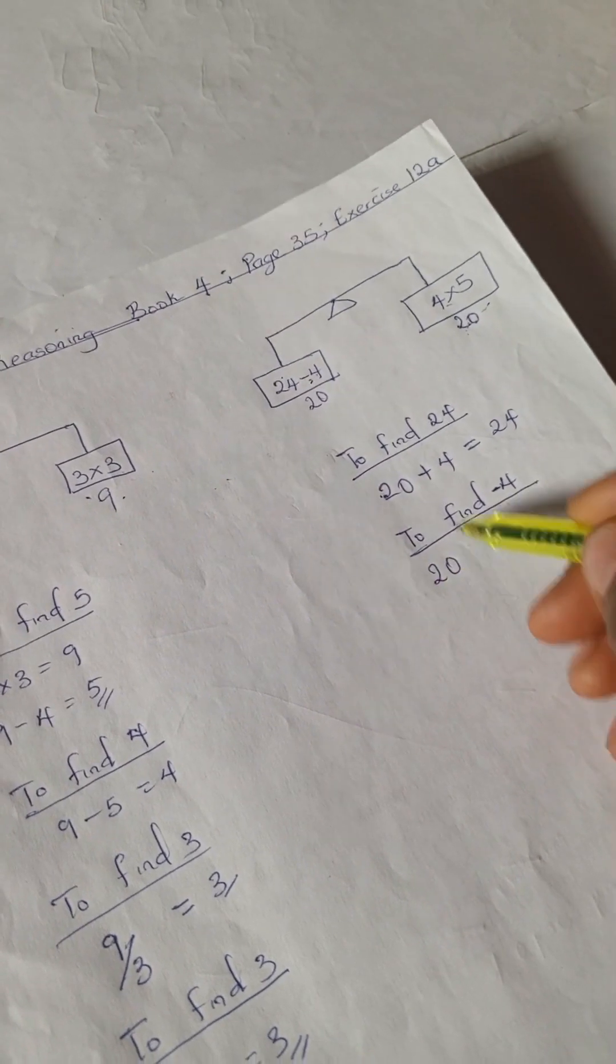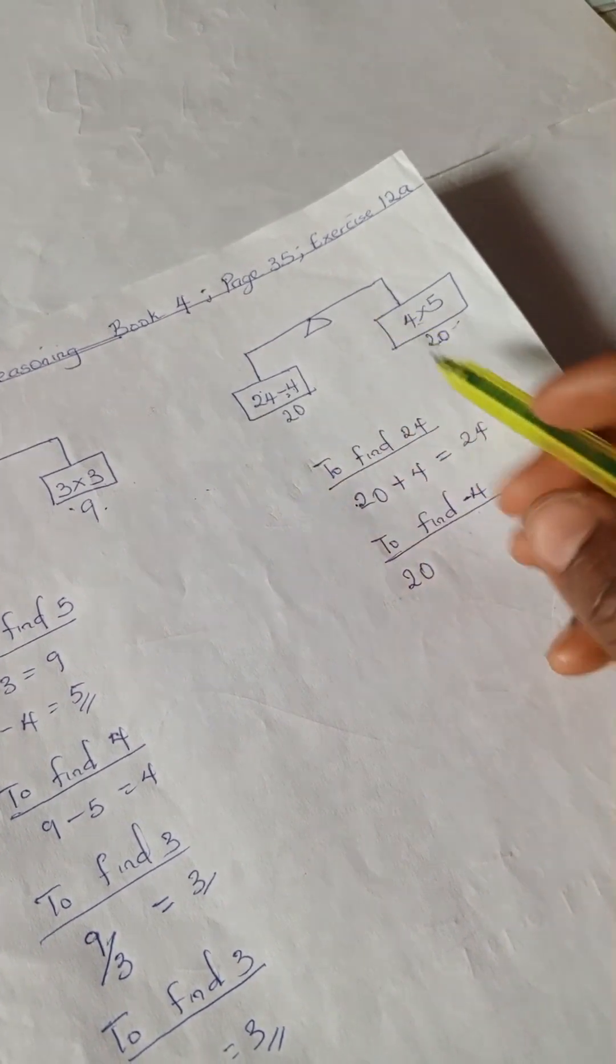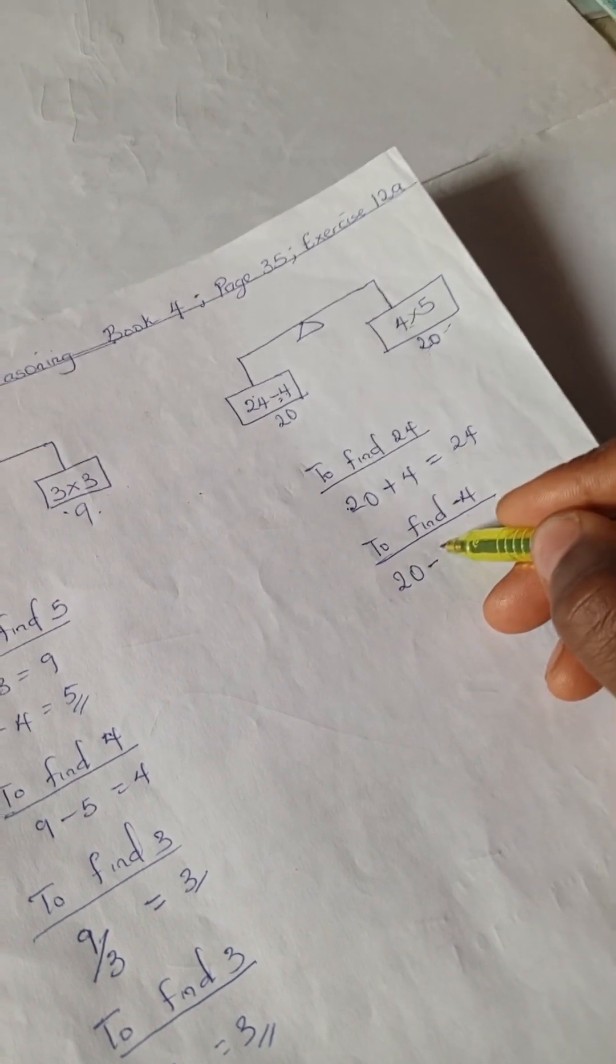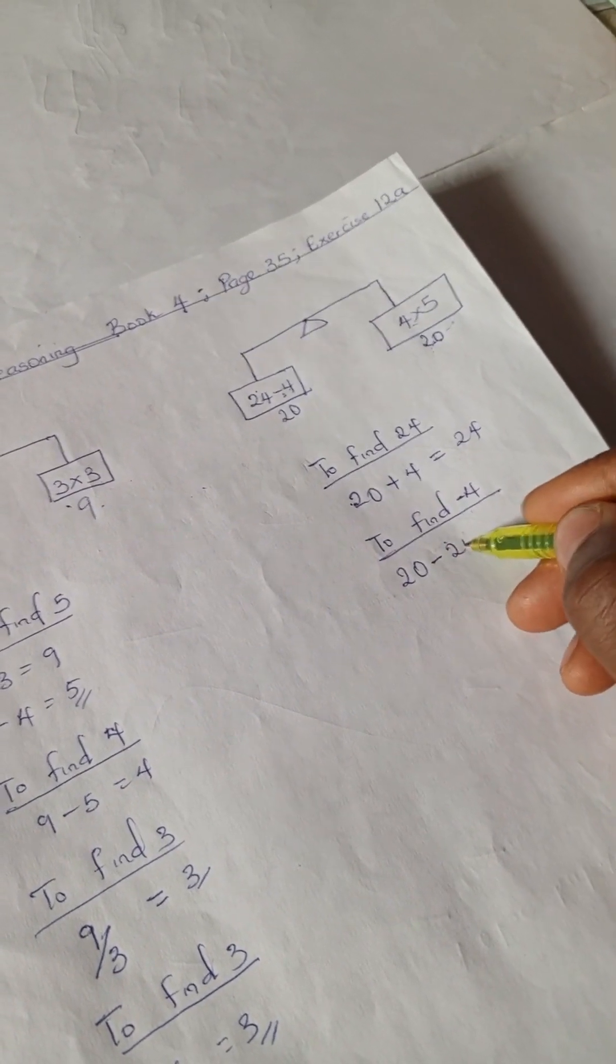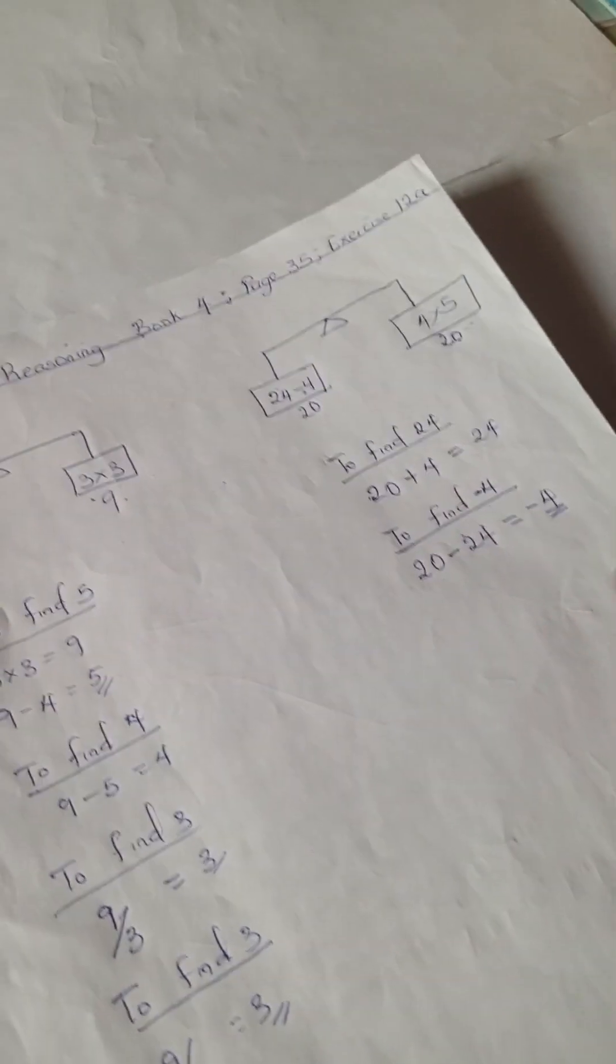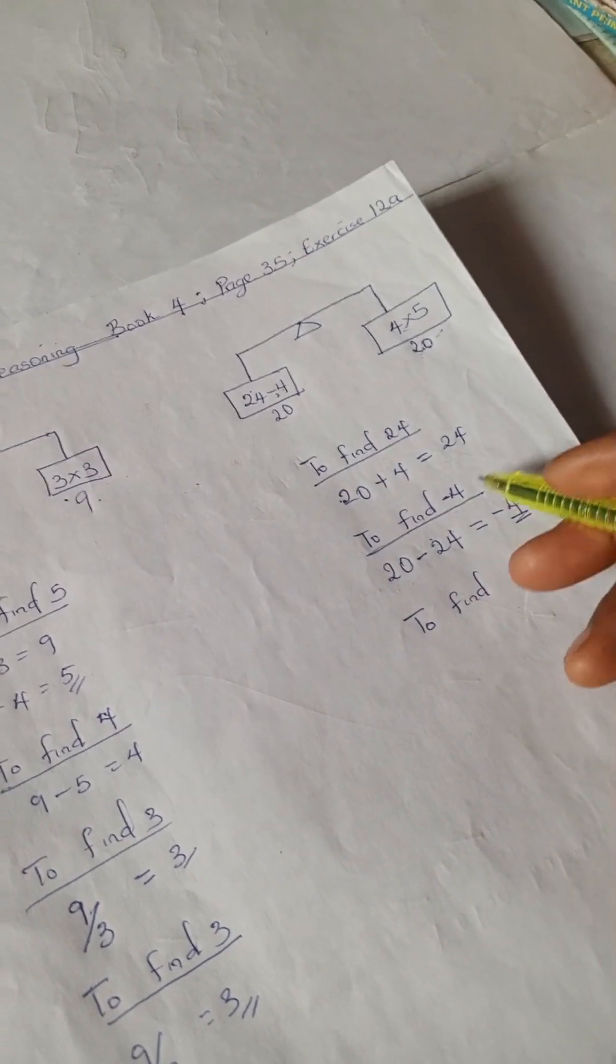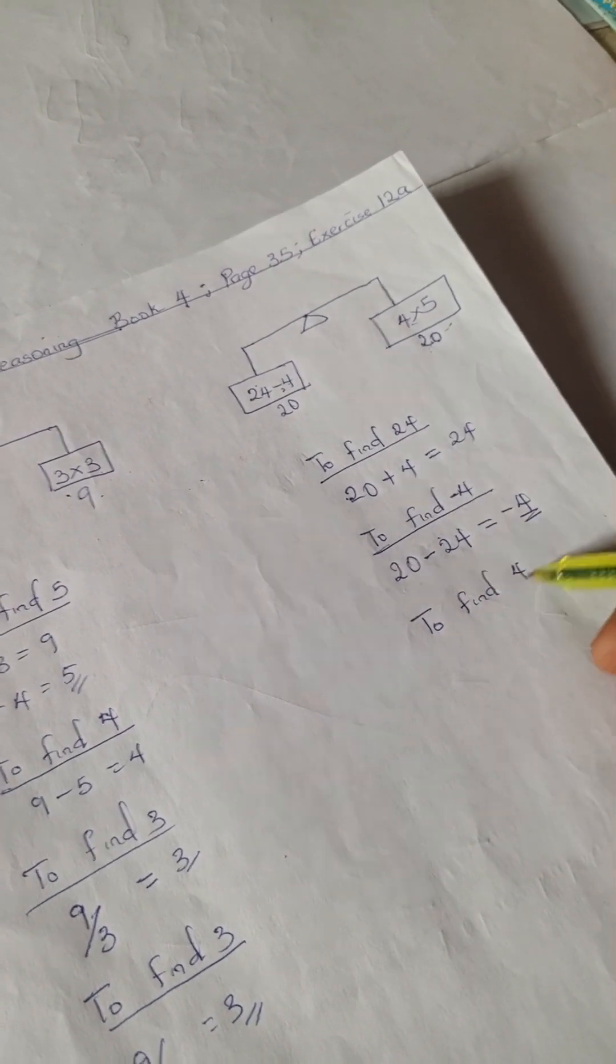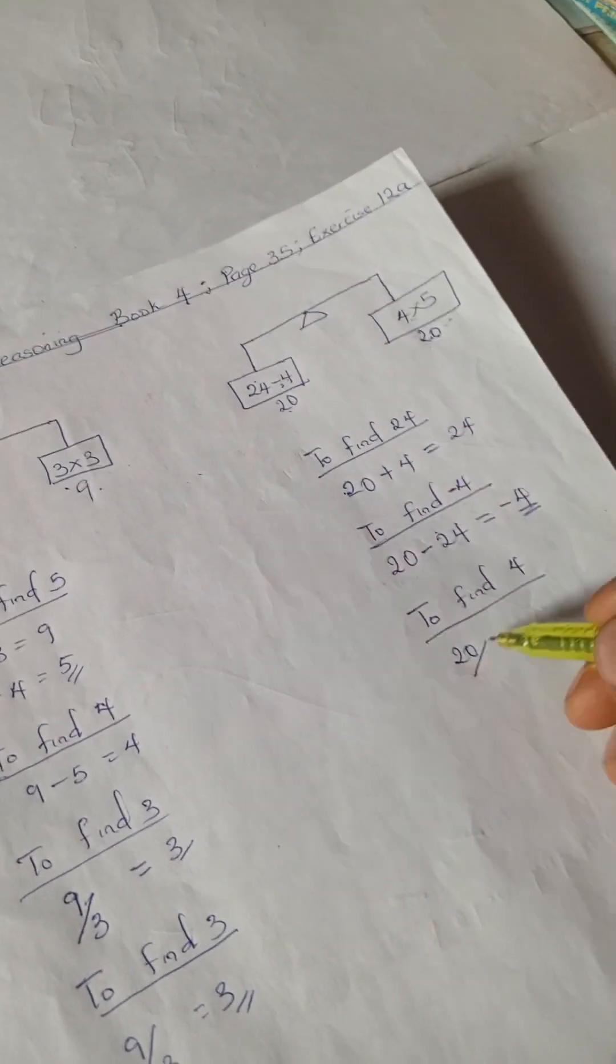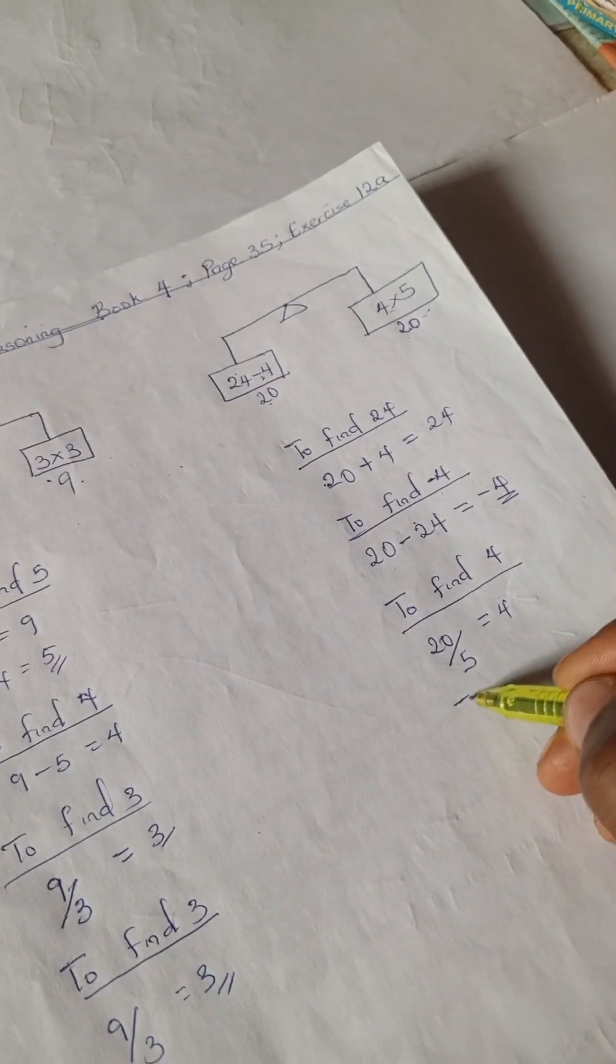So we're going to have our 20. This is a positive 24, but remember we are supposed to subtract, so we have minus 24, right? And 20 minus 24 is minus 4, right? So next we have our 4, right? So we have our 20 here divided by the 5 here, it's 4.